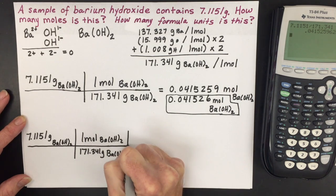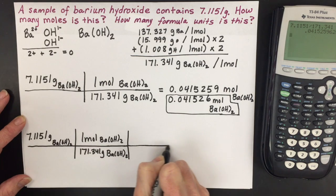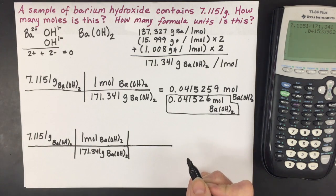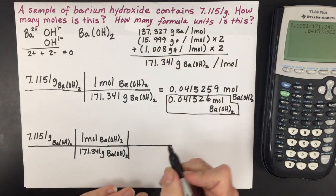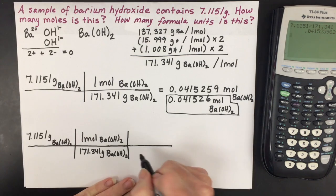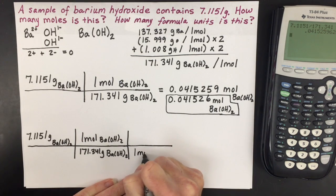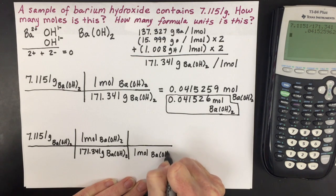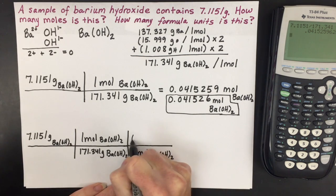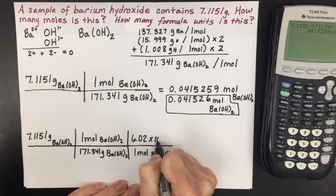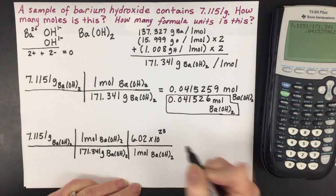But I'm not done because I'm not stopping at mole amounts. I'm trying to get to how many formula units. Because it's an ionic compound, it's called a formula unit. And there's a number called Avogadro's number that says that for every one mole of a substance or particles, it equals 6.02 × 10²³ of that particle.